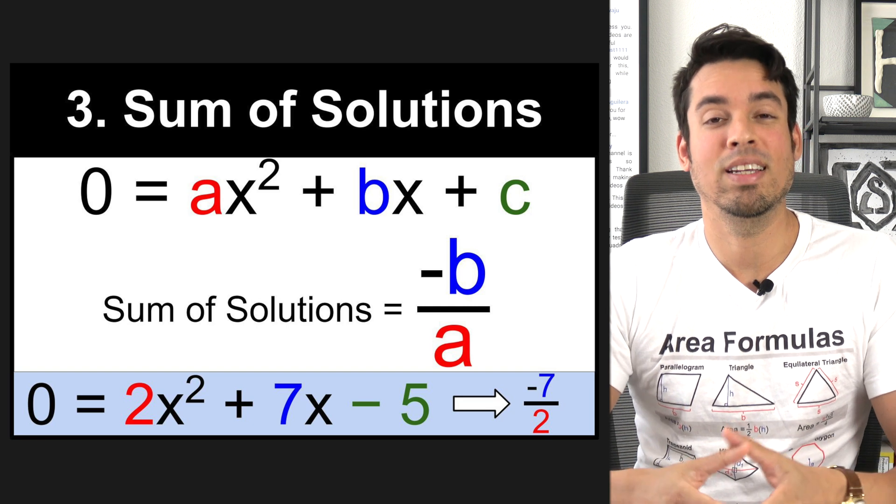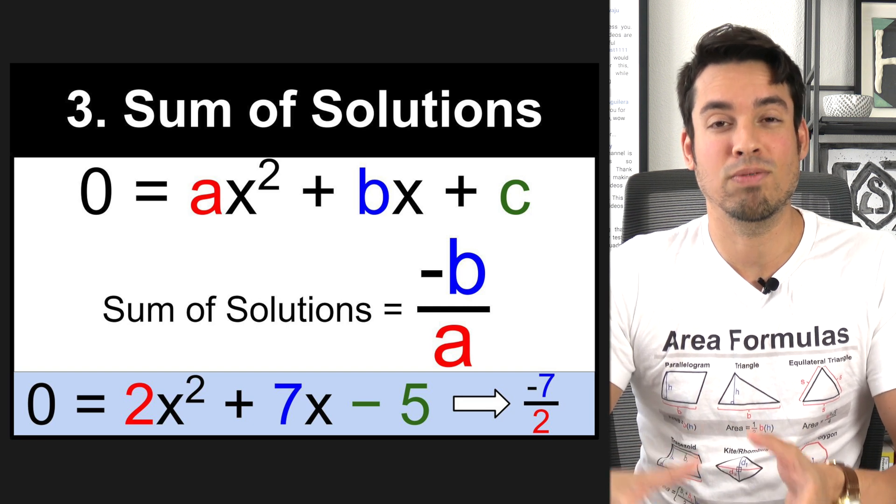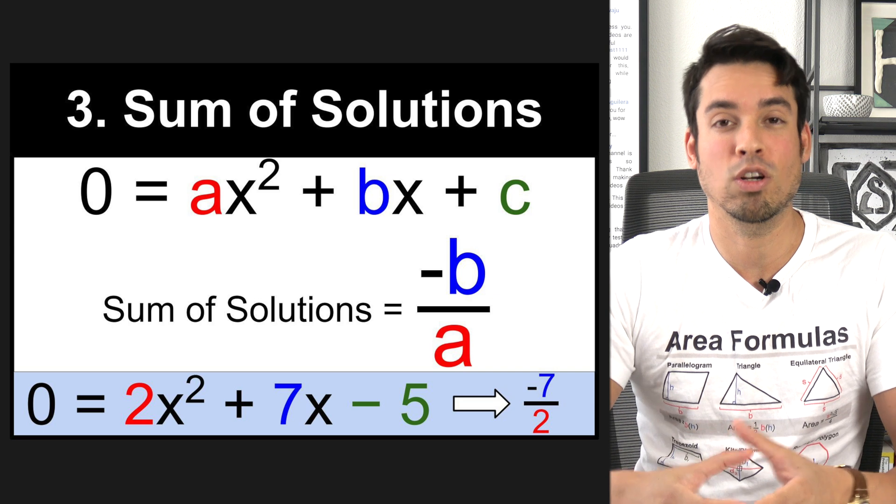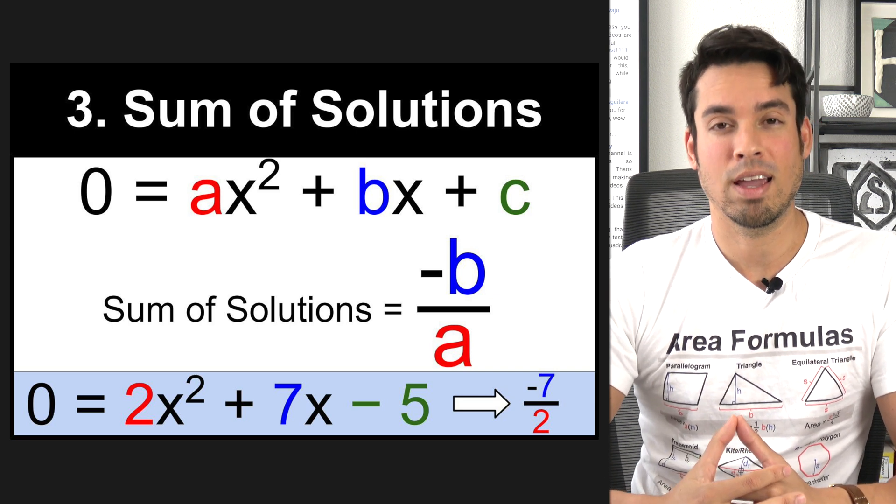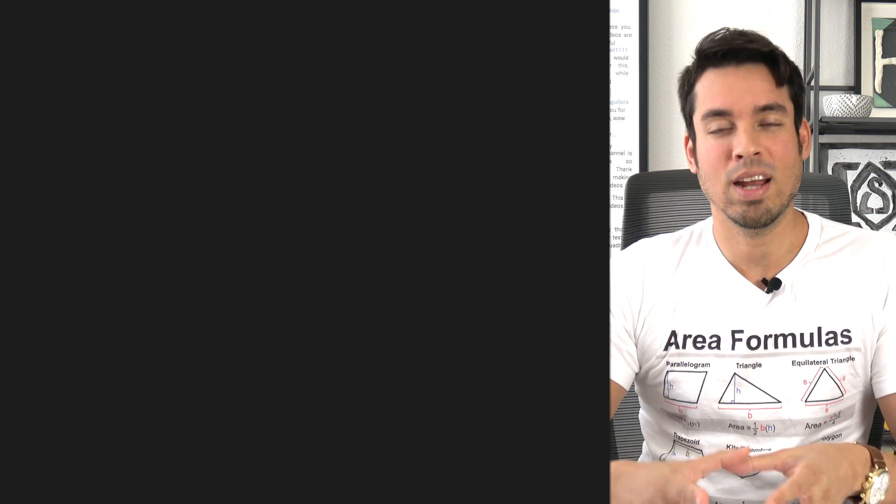And as you can see in this concrete example below, all we've done to find the sum of the solutions of this quadratic equation is simply place the negative B term over A.